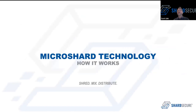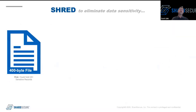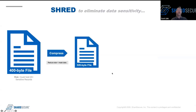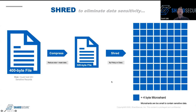Let's take a look at how micro-sharding works. Instead of using encryption to secure data at rest, we go through a process of shred, mix, and distribute. First, we shred the data to eliminate any sensitivity of it. In this example, we take a 400-byte file, compress it down to a 320-byte file, and break it into micro shards. The default is four bytes — think of this process like a cross-cut paper shredder. The whole file is broken into four-byte micro shards, meaning there are 80 pieces.